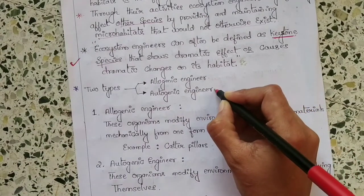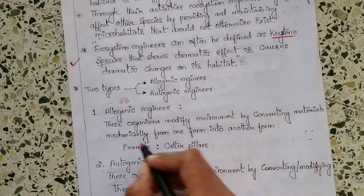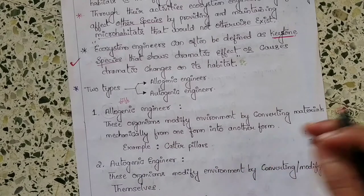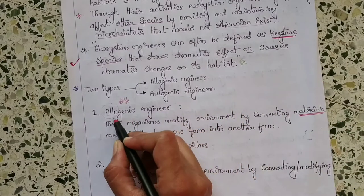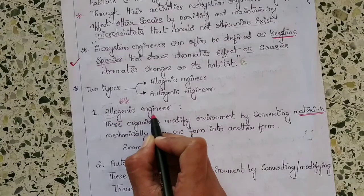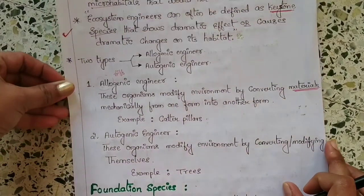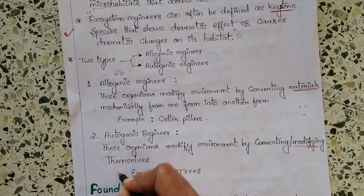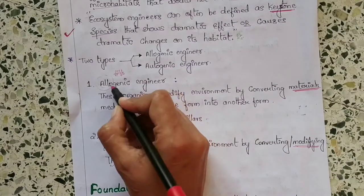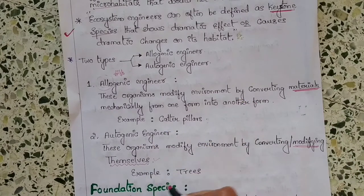The first type is allogenic engineer — 'allo' means different. These organisms modify the environment by converting materials mechanically from one form into another form. The second type is autogenic engineer — 'auto' means self. These organisms modify the environment by modifying or converting themselves. An example for autogenic engineering is a tree.